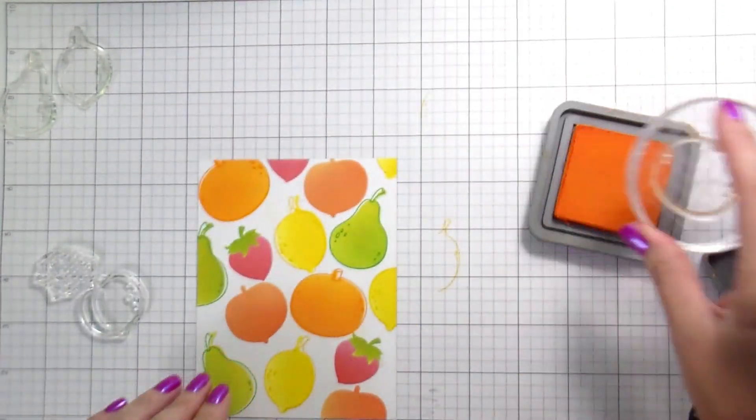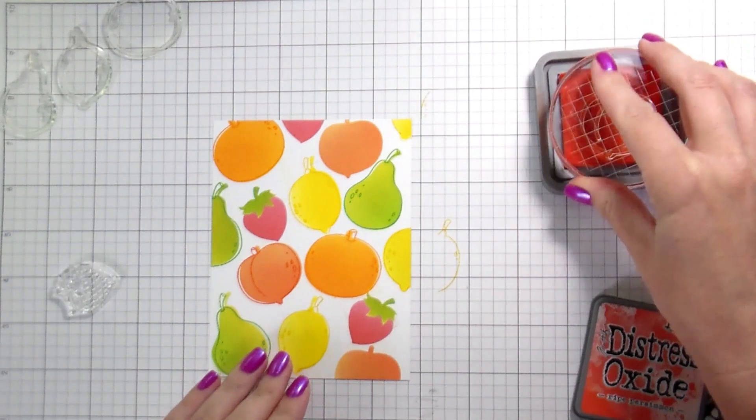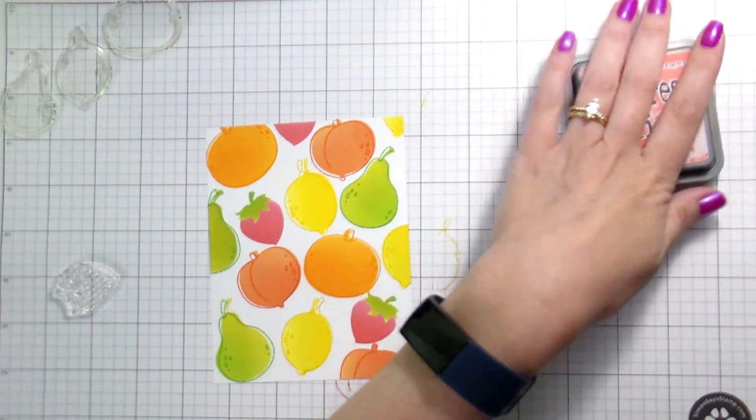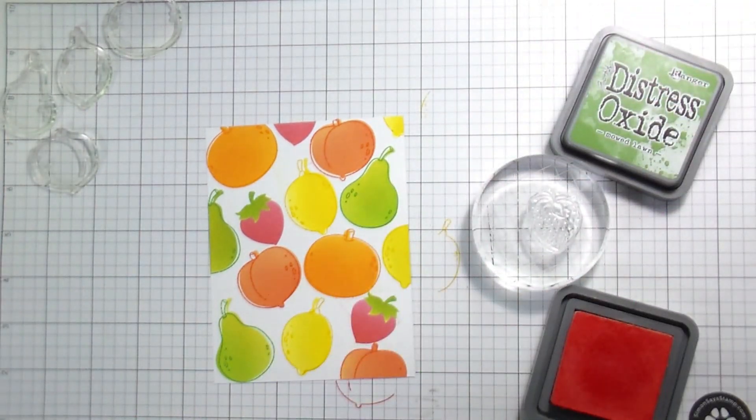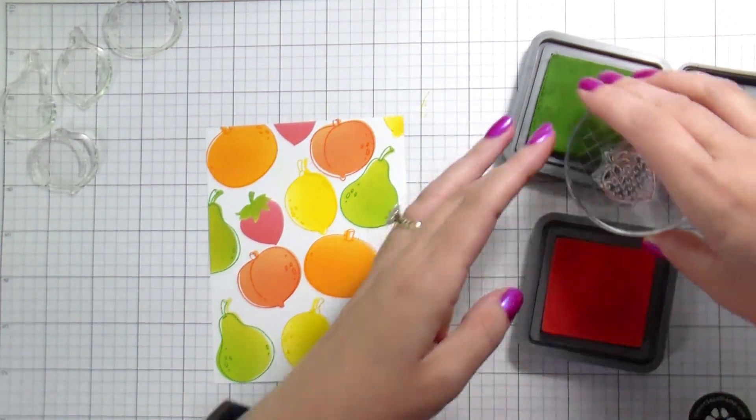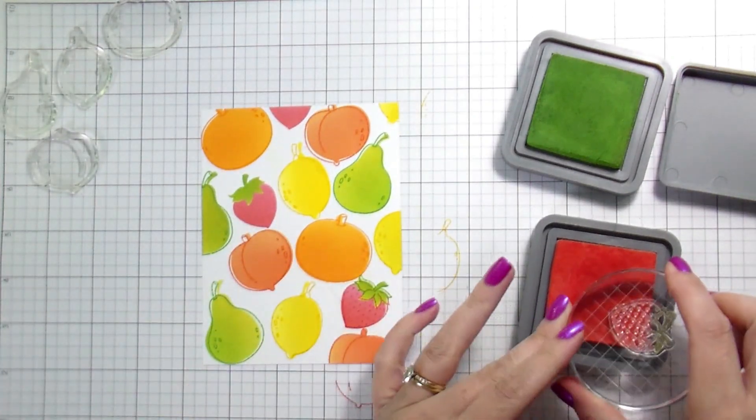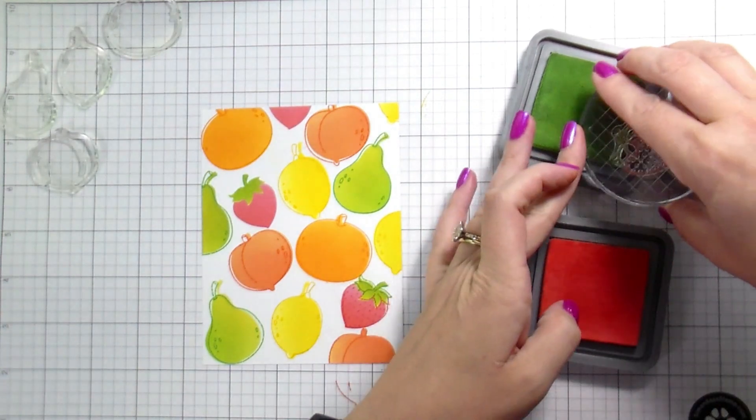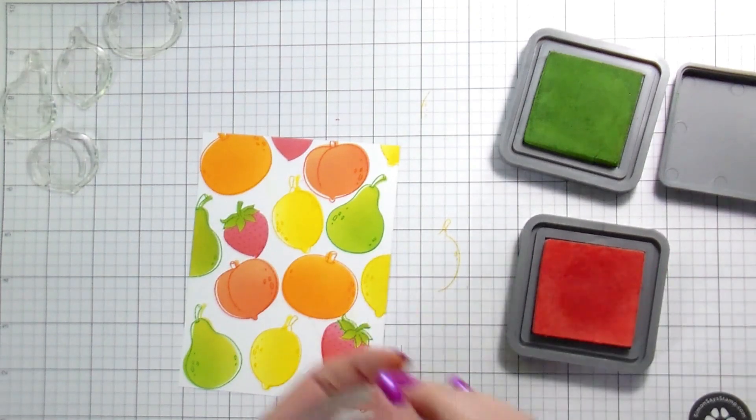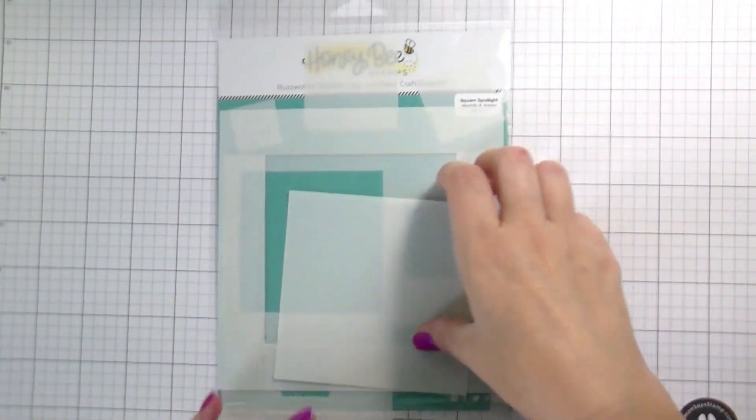The only other one that's tricky is that strawberry that's a little bit tricky just because you have two colors. So I inked them up at the same time. I just let the green part hang off of the red and I let the red part hang off of the green ink pad. Do I have some red in my leaves? Yes. Do I have some green in my strawberry? Yes. Do I think that's a big deal? No, I do not. If it bothers you, you could stamp them individually, but you just heighten your chance that you're going to have a mishap for alignment.